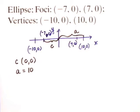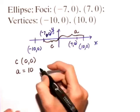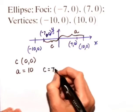Each focus is c units from the center, so we know now that c is equal to 7.